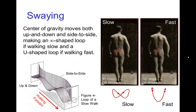That side-to-side motion is actually synchronized with the up and down motion, but the exact pattern of that synchronization varies depending on whether we are walking slowly or walking quickly. As we see in the diagram, the combination of up and down motion and side-to-side motion tends to make the center of gravity follow a sideways figure eight, or figure infinity loop, when the character is walking slowly. When the character is walking quickly, the synchronization transitions to more of a swinging U-shape pattern — almost like a pendulum swinging back and forth in a fast walk.